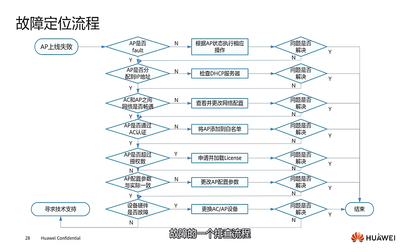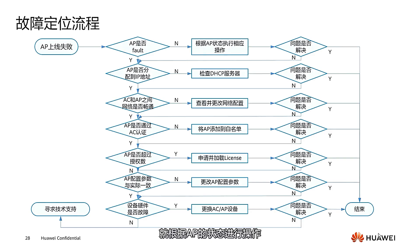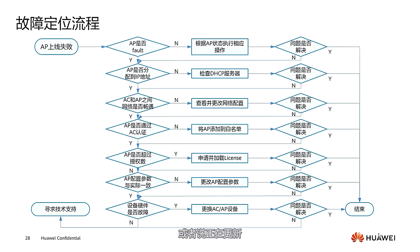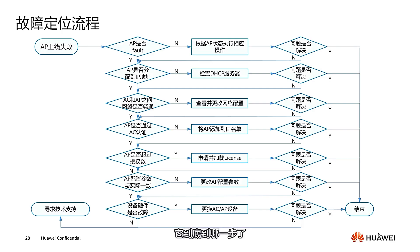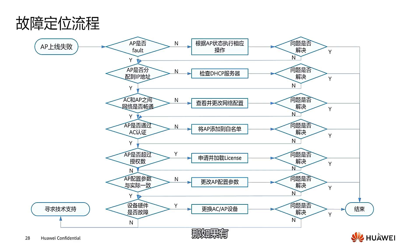Now let's look at the troubleshooting process for AP online faults. First, check if the AP itself is faulty. If not, proceed based on the AP's status — it may show a version mismatch, or the AP may still be downloading configurations or updating. You can use 'display AP update information' to see where it is in the process. If it's not a fault, then check if the AP has been assigned an IP address; if not, check the DHCP server.